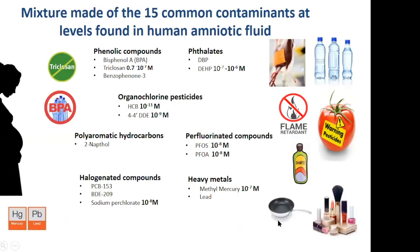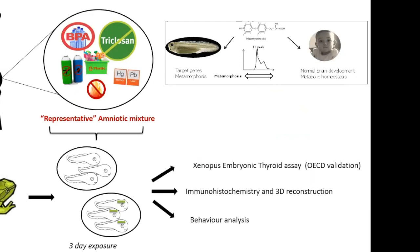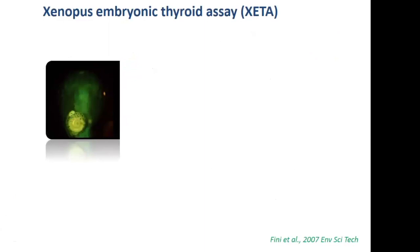We wondered what model to use to test this representative amniotic mixture. We used the conserved property of thyroid hormone across evolution: just as a T3 peak is necessary for brain maturation in humans, it is also necessary for a tadpole to metamorphose into a frog. If you block this peak, the tadpole never becomes a frog. We tested the representative amniotic mixture on tadpoles — both wild-type and transgenic — using the Xenopus Embryonic Thyroid Assay (XETA), which is under OECD validation, combined with immunohistochemistry, 3D reconstruction, and behavioral analysis.